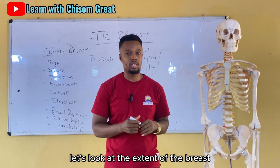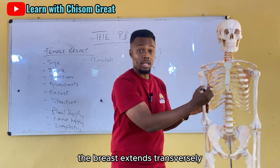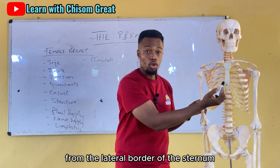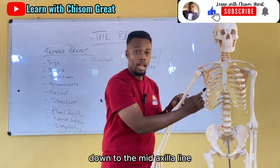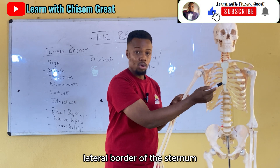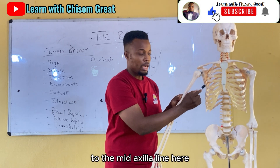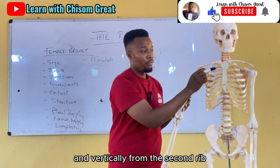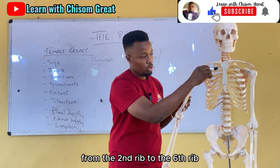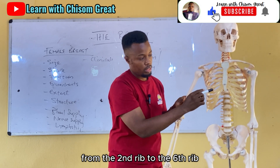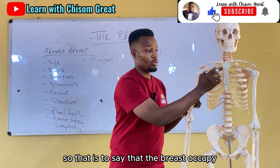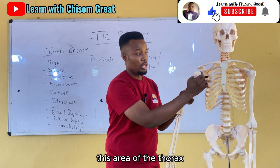The breast extends transversely from the lateral border of the sternum to the mid-axillary line, and vertically from the second rib to the sixth rib. This defines the area of the thorax that the breast occupies.